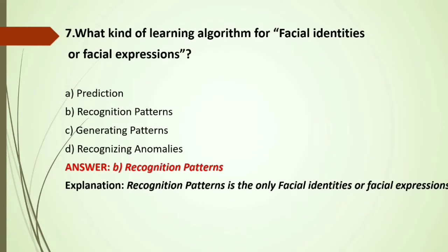MCQ: What kind of learning algorithm is needed for facial identities or facial expressions? Options: A) Prediction; B) Recognition patterns; C) Generating patterns; D) Recognizing anomalies. If a machine is given data of facial expressions and facial identities, it needs to recognize patterns from a large amount of face data. Prediction, generating patterns, and recognizing anomalies are not applicable here. Answer: Recognition patterns.